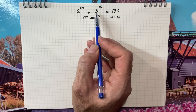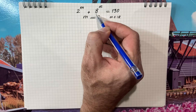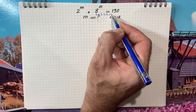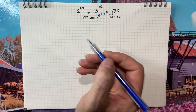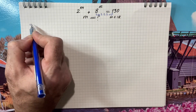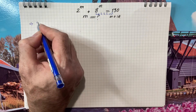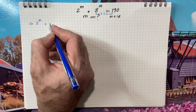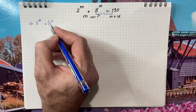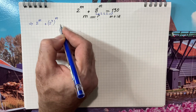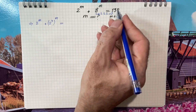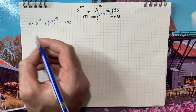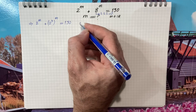To start the solution, I'm going to rewrite 8 in the form of 2 cubed. We know 8 is 2 times 2 times 2, which means 2 cubed. So our equation is going to be 2 raised to m plus 2 cubed, which means 8, raised to m, and the right hand side is 130.